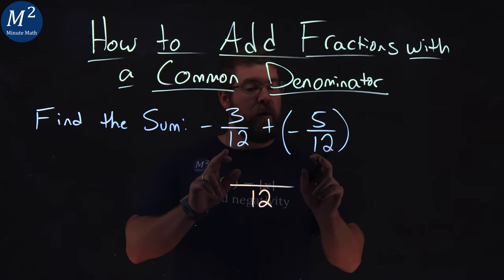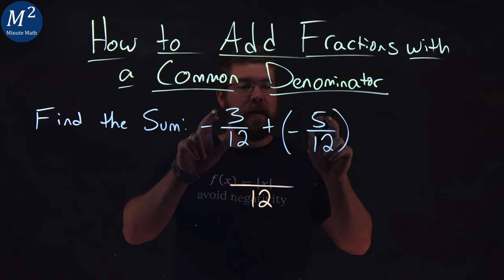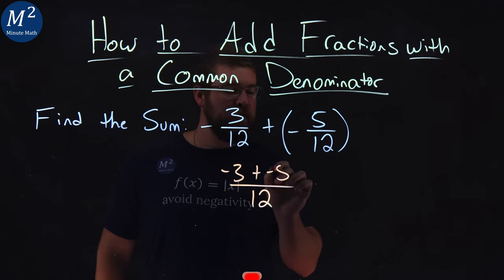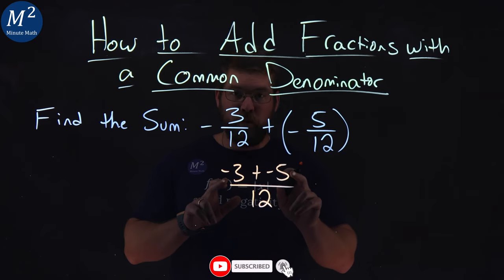Since we have a common denominator of 12, we can add the numerators, negative 3 and negative 5. Negative 3 plus a negative 5 is how we would combine that to our numerator.